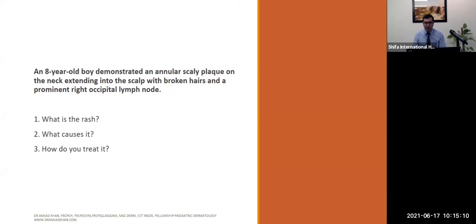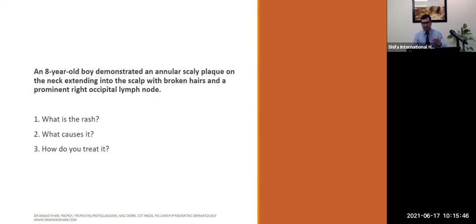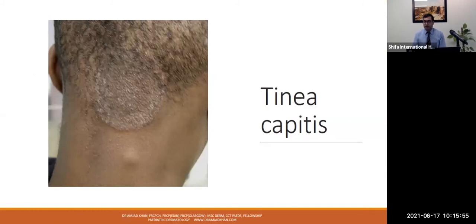Case: an eight-year-old boy demonstrated an annular scaly plaque on the neck extending into the scalp with broken hairs and a prominent right occipital lymph node — that last point is very important. Anything more than skin-deep will involve the lymphatic system, meaning the infection is beyond the skin and therefore significant. This is tinea capitis — a fungal infection of the scalp, discoid, scaly, annular, and raised — with prominent lymph nodes. Anything involving the lymphatic system needs systemic agents.